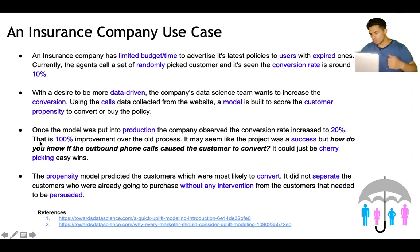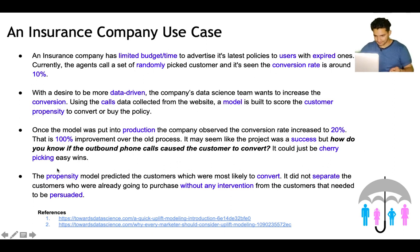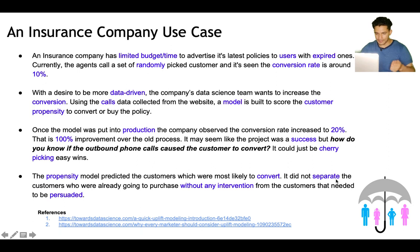The agents were previously calling randomly picked customers, but now they call only those recommended by the model, and the conversion rate increased — a 100% improvement over the old 10% rate. It may seem the project was a success, but how do we know if the outbound phone calls actually caused the customer to convert? It could be just checking easy wins — the propensity model predicted customers most likely to convert but did not separate customers who were already going to purchase without any intervention.